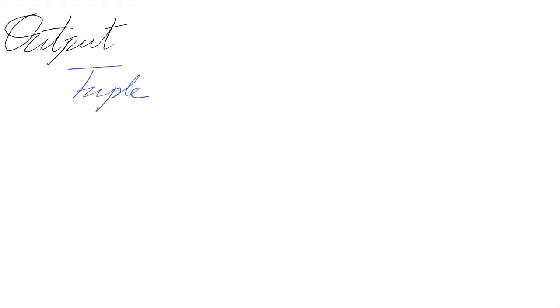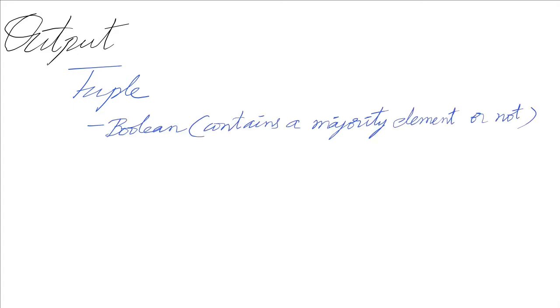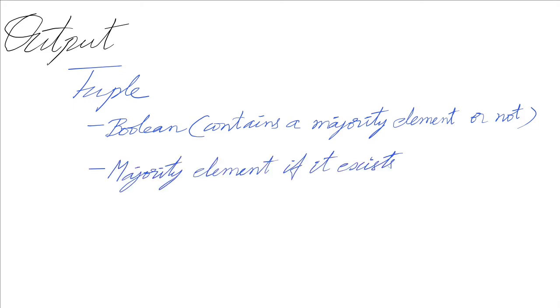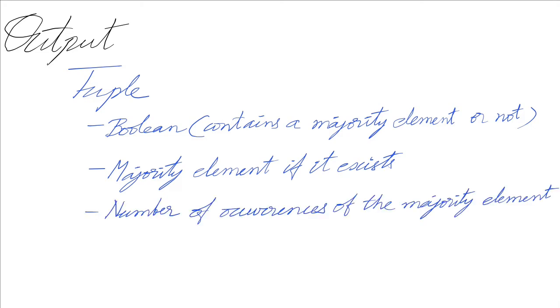What does the output consist of? The output is a tuple that consists of three elements. The first element is a boolean indicating whether the list contains a majority element or not. The second is the majority element if it exists in the given list. The third is the number of occurrences of the majority element.